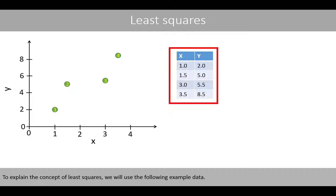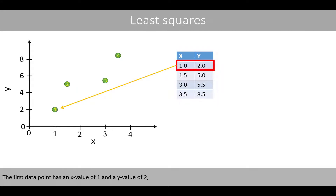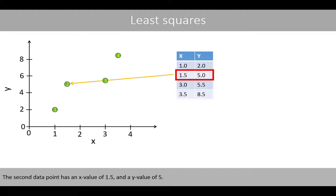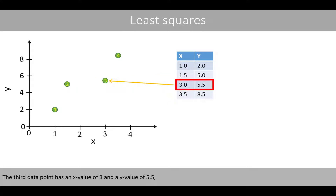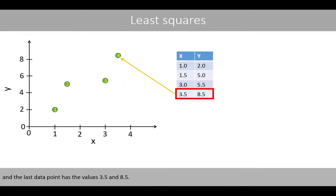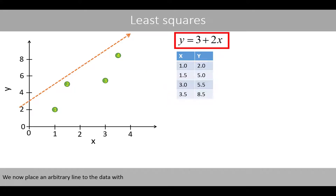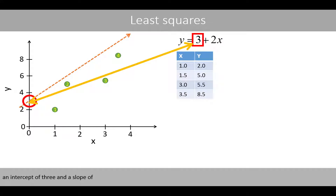To explain the concept of least squares, we'll use the following example data. The first data point has an x value of 1 and a y value of 2. The second data point has an x value of 1.5 and a y value of 5. The third data point has an x value of 3 and a y value of 5.5. And the last data point has the values 3.5 and 8.5. We now place an arbitrary line to the data with an intercept of 3 and a slope of 2.